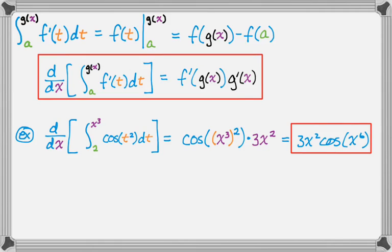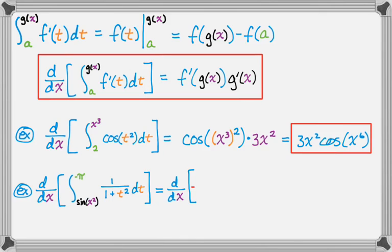And we'll look at one more. So here we have the derivative with respect to x. So this one's interesting, right? Because the variable is on the bottom. So step one of this is to switch the bounds and change the sign. So this will be the derivative of the negative of the integral from -π to sin(x²). One over 1 plus t² dt. Turns out we could actually integrate that, but we don't want to bother because we're just going to then find the derivative anyway.